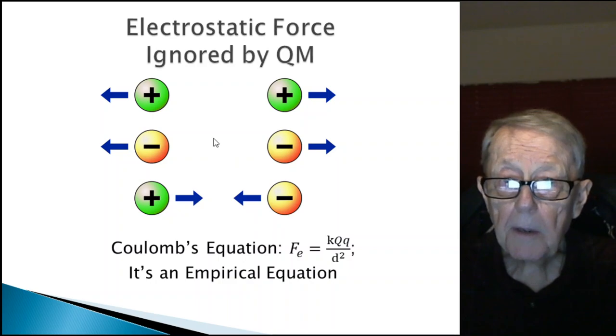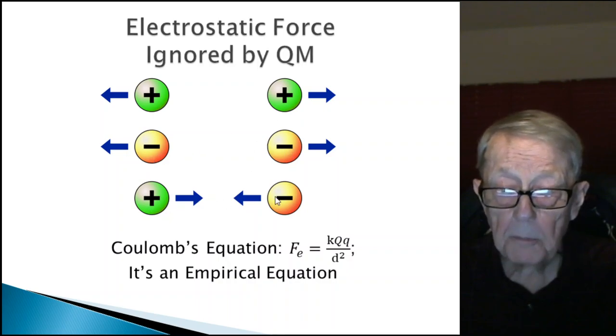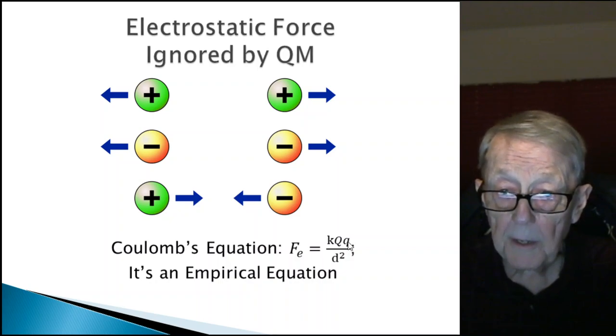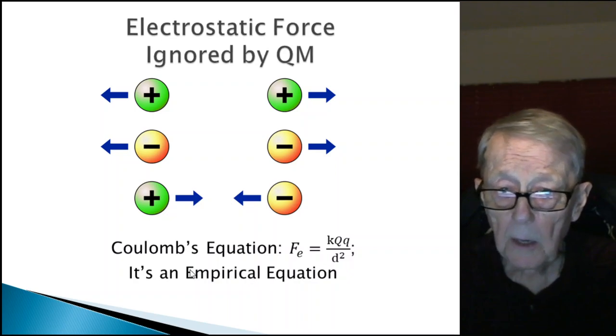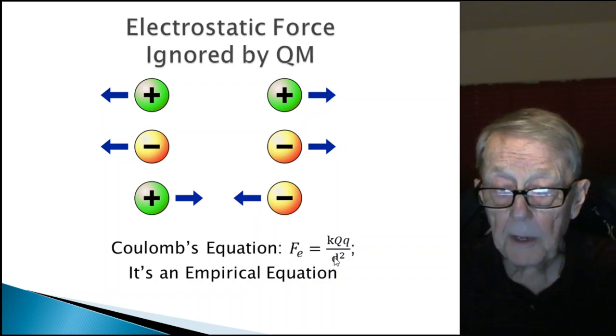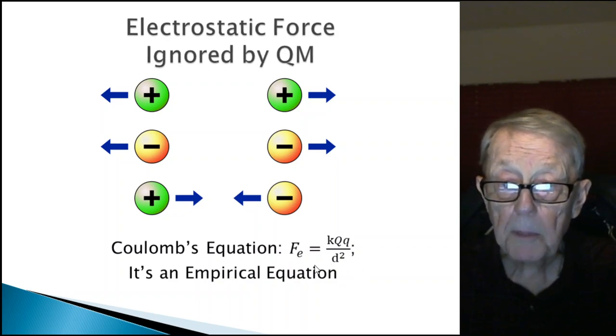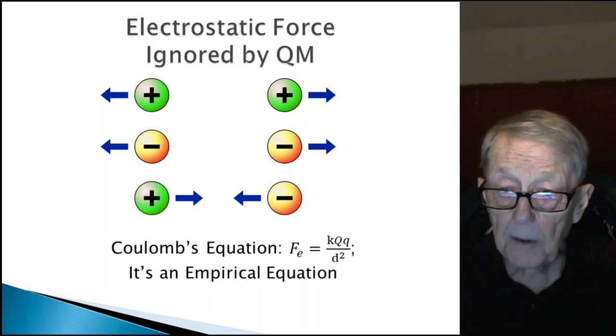This is to repeat the fact that this is an electrostatic force and it's ignored by quantum mechanics. Plus repels plus, minus repels minus, plus and minus attract, and you have these forces. There is an equation for that force. If this is a proton here and an electron here, this is the electrostatic force between a proton and an electron, and it tells you the magnitude, the value of that force. This is an empirical equation. Coulomb did a lot of testing, a lot of work, developed this equation. It was developed after Newton developed his, and you're kind of thinking, well, maybe he had Newton's equation in mind when he worked on this particular one, because they look very similar.